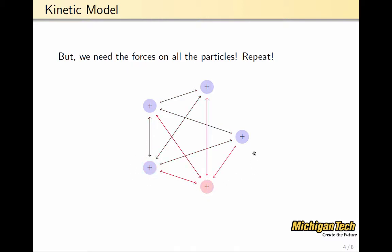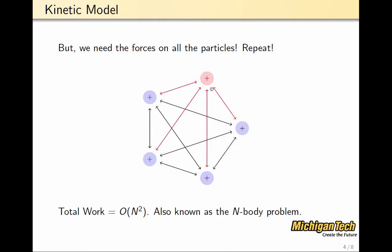and that charge, and that charge, and that charge as well. So, in all, the total work that's required is order n squared, and this is why this is known as the n-body problem, which is computationally expensive.